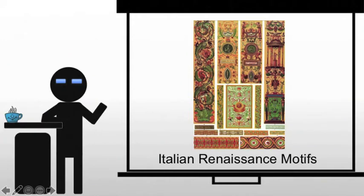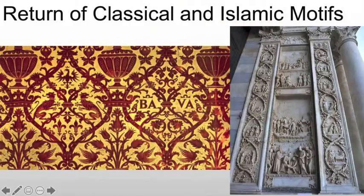Now that you've got some idea of what goes into the Renaissance and why it starts in Italy, let's start with Italian Renaissance motifs — those most common decorative forms that we tend to see in the Italian Renaissance. Some of these will be repeats because, of course, they're taking from previous societies.